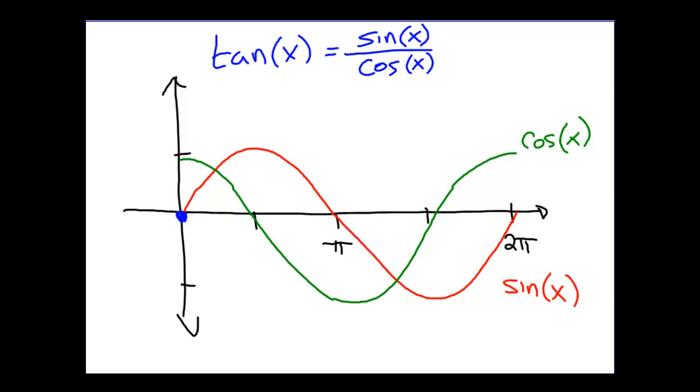And we knew this already simply because of our memorized facts here. So, that means that any time that sine is 0, tangent will be 0. And in particular, sine happens to be 0 again at π. Sine happens to be 0 at 2π. So these are the zeros of our tangent function.